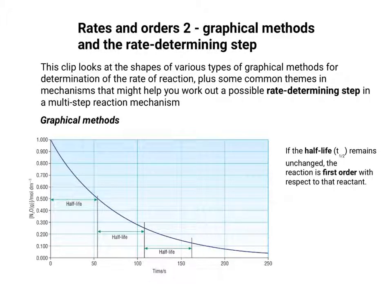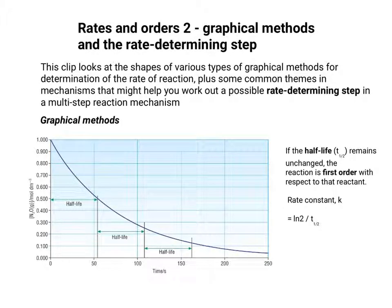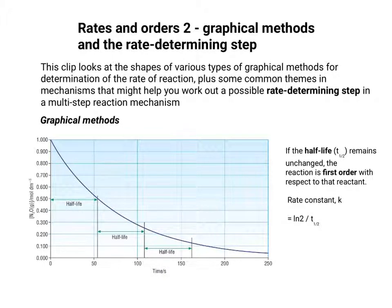If you take the half-life of one of these curves and it turns out to remain unchanged, that tells you the reaction is first order with respect to that reactant. You can also use the half-life to work out the rate constant: take the natural log of 2 divided by the half-life, and you get the rate constant.